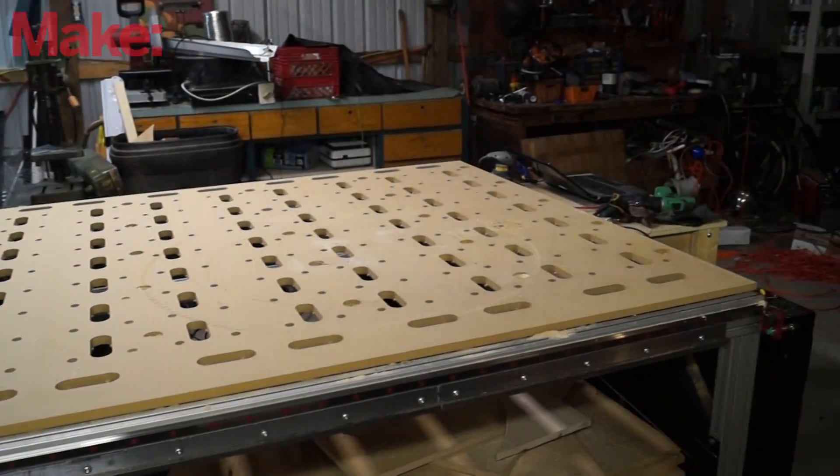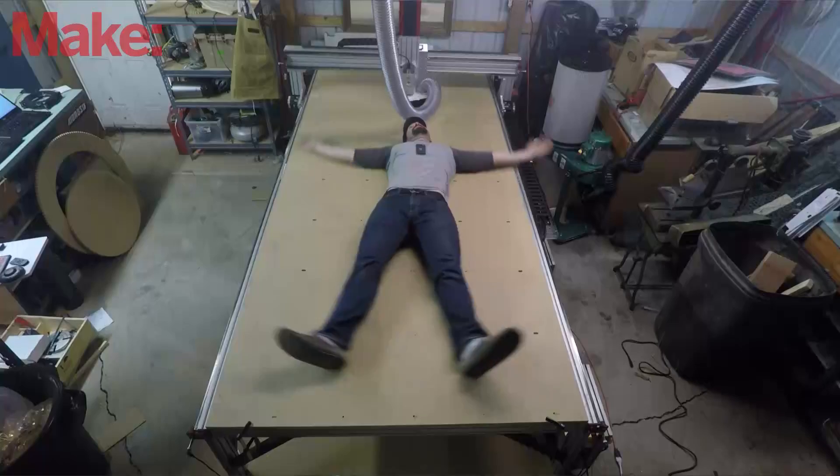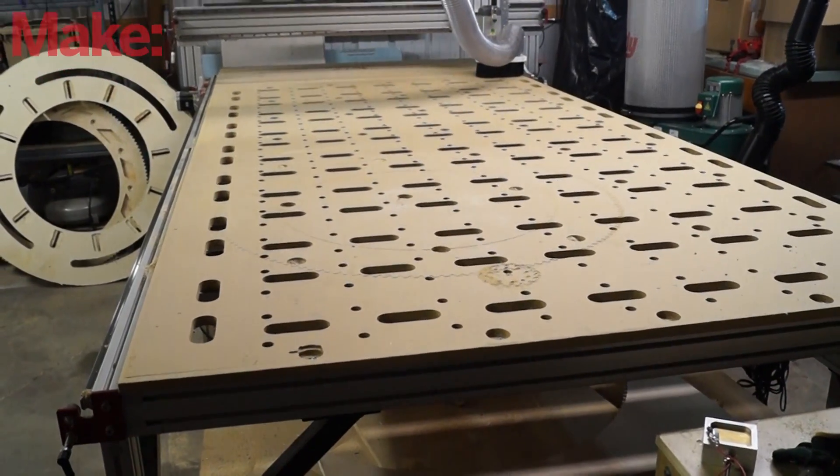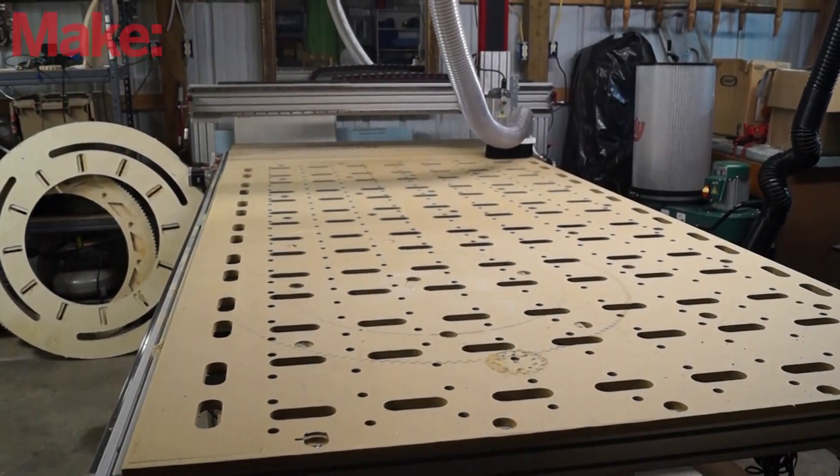For this project we're going to use a Pro 60 120. So that's a 5 foot by 10 foot machine. One of our industrial category machines that you can use for your business or your home shop.